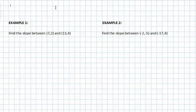For example one, we're asked to find the slope between the coordinate point (7,2) and (11,4). So we're going to use the equation m or slope is equal to y sub 2 minus y sub 1 over x sub 2 minus x sub 1.